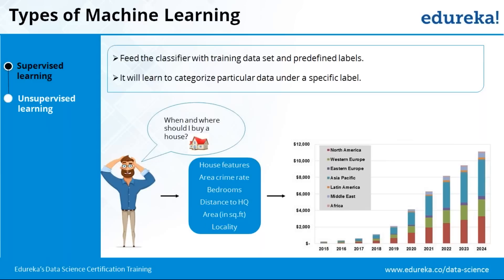There can be numerical variables like distance to headquarters and area in square feet, and categorical variables like area crime rate, house features, and locality. Based on these attributes, when you feed the entire data with someone who has already bought houses in that location, the system starts learning — if something was bought in this location with these features, that is how the system builds itself and the model gets created.